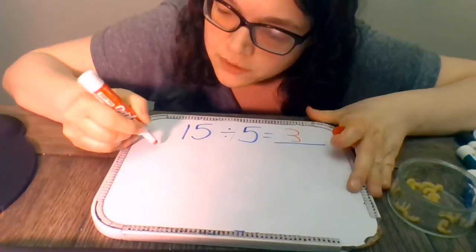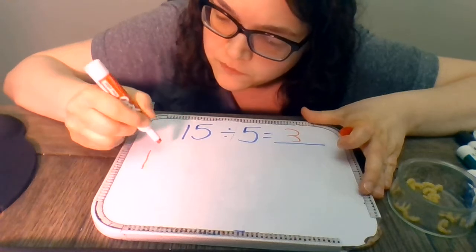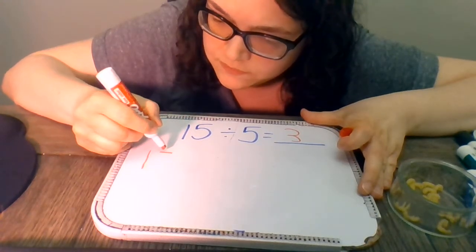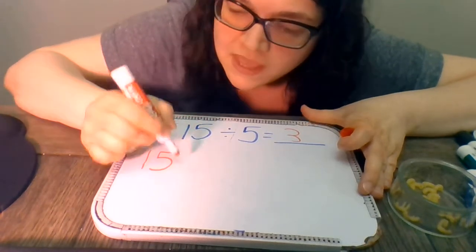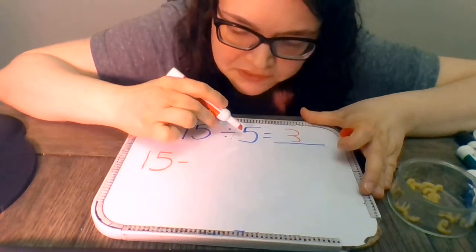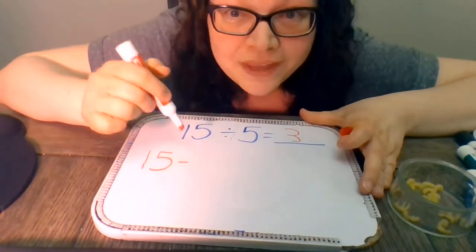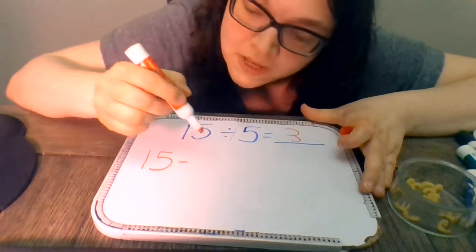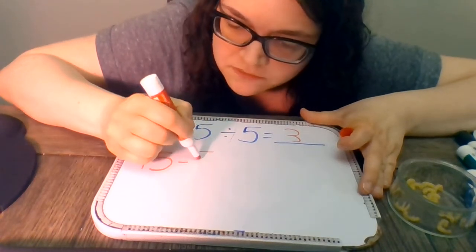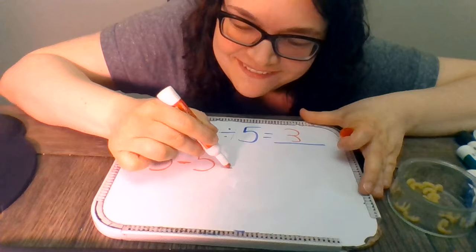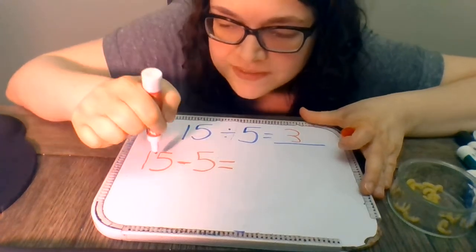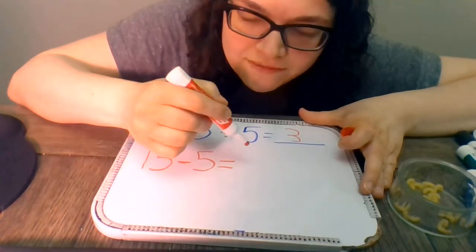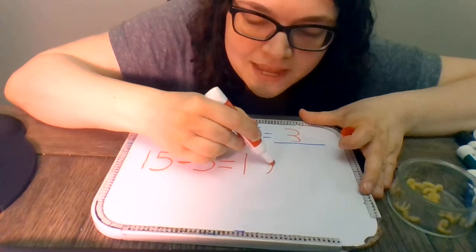So here's how it works. We start with our first number here, which is 15. And we are just going to subtract 5 until we get to zero. Okay. So 15 subtract 5 equals, so 15 take away 5 equals 10.